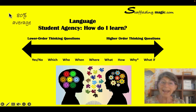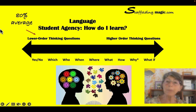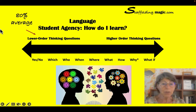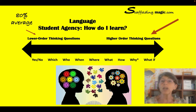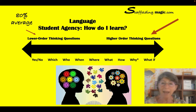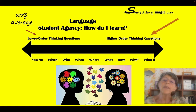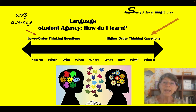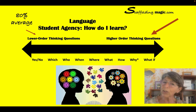80% of people, on average 80% of the time, use lower-order thinking questions — that is not going to help our students in the long run. We need to push them into higher-order thinking questions so that they can process information. Here's an example of how to use the question continuum using student agency.